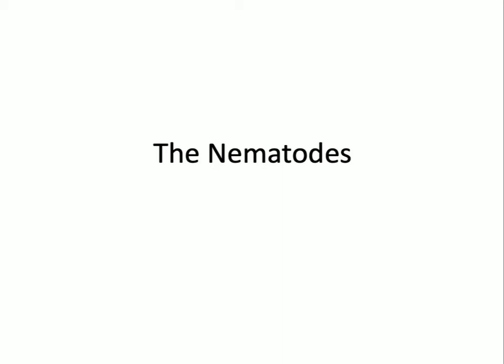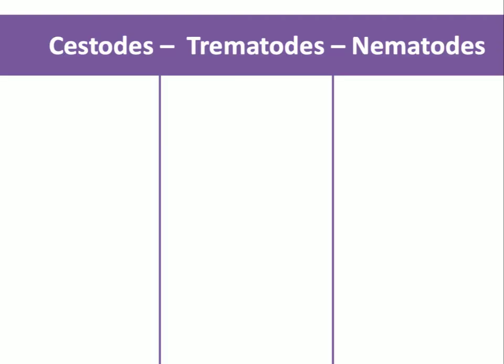This week we are going to round out our organ flukes, and mostly our worms, by looking at the nematodes. I want to start by comparing the groups of worms that we've looked at so far. We saw the trematodes first, which were the fluke flatworms. We have the cestodes, which are the tapeworms, the segmented flatworms, and then we have the nematodes.